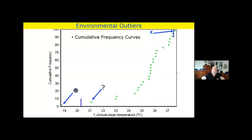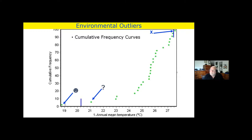Environmental cumulative frequency curves are used to detect environmental outliers. Here we're using annual mean temperature against cumulative frequency for some plants. Cumulative frequency curves pull out a fixed number at the top and bottom of the array — it might be the 95th or 97.5th percentile — but it always pulls out some records. A record at the lower left is probably an error and gets picked up. One at the upper right is probably not an error. But for a record in the middle, it may or may not be an error — it's hard to tell.